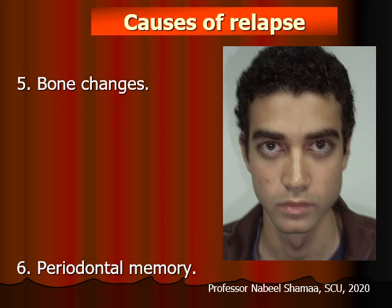Another cause is bone changes. Also, periodontal memory: teeth are suspended in the bone through the periodontal ligament. In cases of rotation, there are circumferential periodontal fibers called circular fibers. Once you correct the tooth into the final correct position, the apical periodontal fibers are not yet reoriented, so once you remove the retainer there is a memory in the periodontal fibers to return back to the original position.